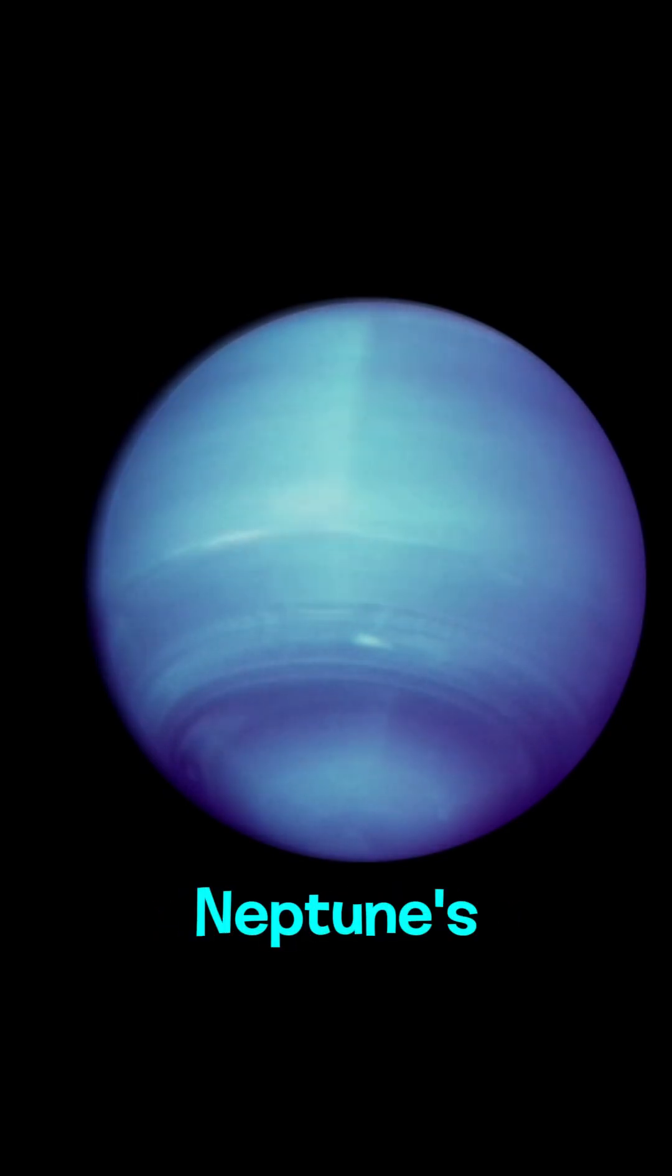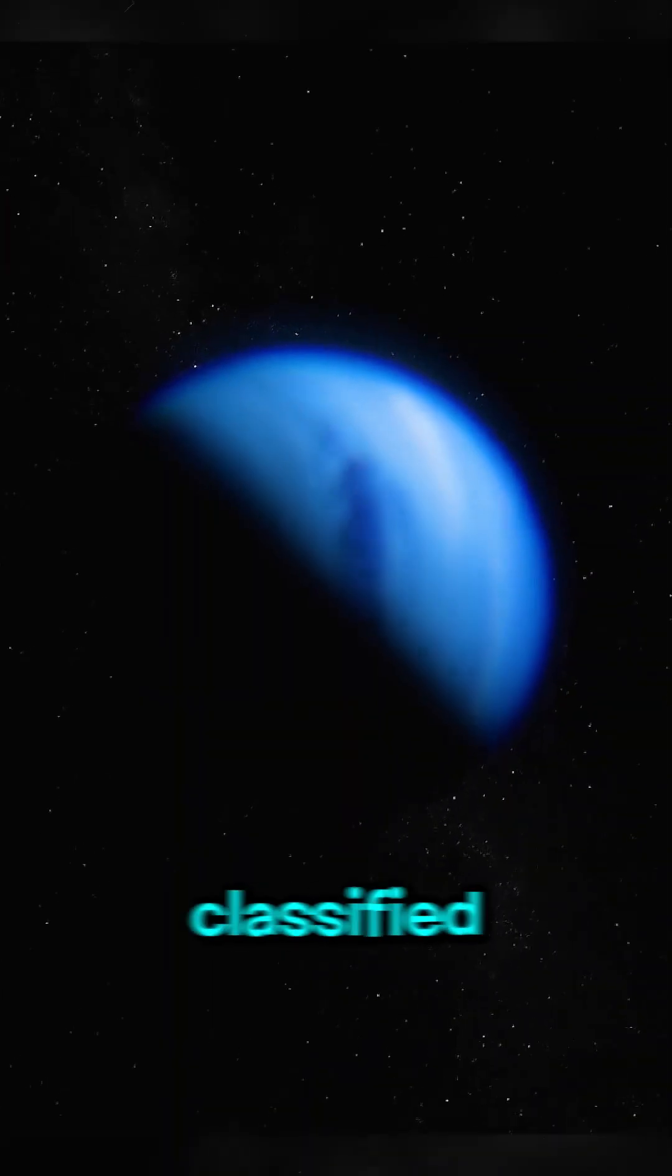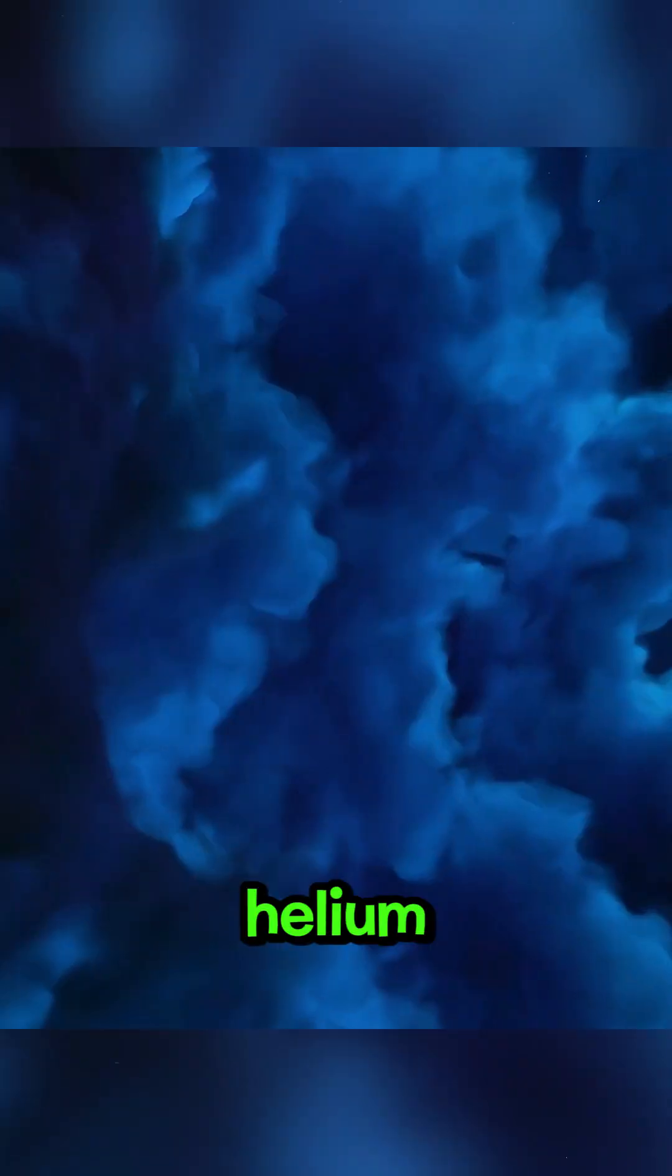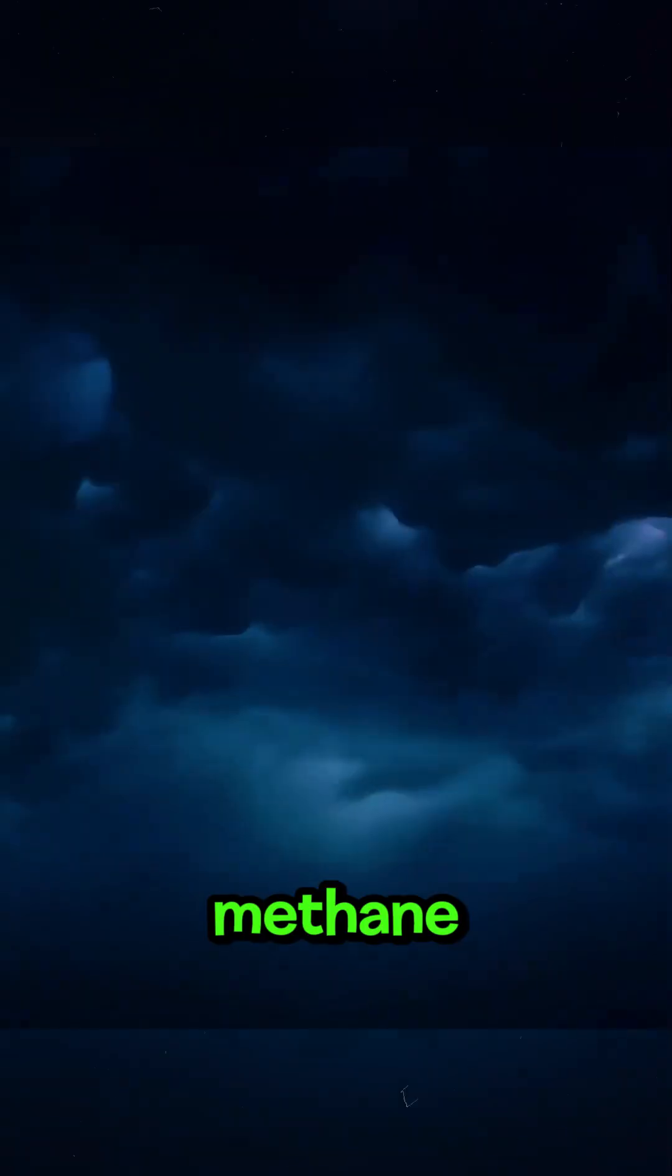Neptune is classified as an ice giant, composed mainly of hydrogen, helium, and water, with traces of methane and ammonia.